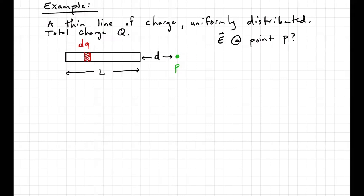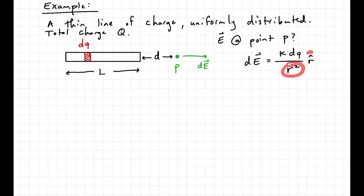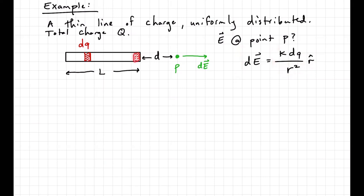I'm going to pick an arbitrary spot on this object — a little bit of the object that has a little bit of charge dq. The electric field from that dq is going to point radially outward from dq toward point P. So dE equals k dq over r squared, r-hat. The first thing is to figure out what the r value and r-hat value are for this specific dq. We're going to integrate over the entire body, taking dq sequentially as we go down the object.